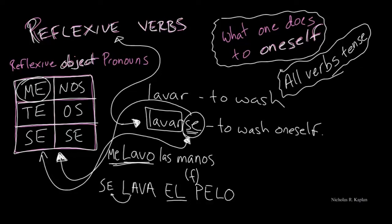We say el, la, los, or las. Se lava el pelo could be 'he washes' or 'she washes.' So to clarify, we might want to put él out in front: él se lava el pelo. That is a reflexive verb.